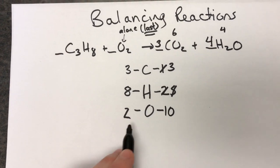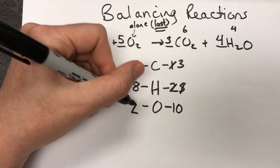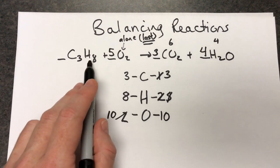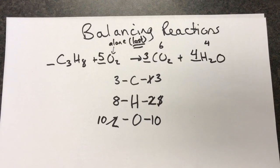And it doesn't change. 10 divided by 2 is 5 and that's why I put a 5 there. And now this reaction's balanced. So C3H8 plus 5O2 yielding 3CO2 and 4H2O.